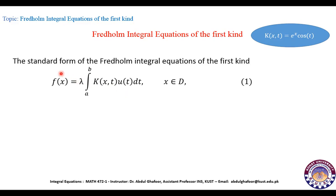Let me recall the previous two cases. In the case of Fredholm integral equations of the second kind, u(x) = f(x) + λ∫_a^b K(x,t) u(t) dt. In the homogeneous Fredholm integral equations, u(x) = λ∫_a^b K(x,t) u(t) dt. In both previous cases, u appeared under the integral sign as well as outside it. But in the current case, u is only under the integral sign, not outside it, which makes it more difficult to solve.